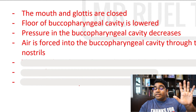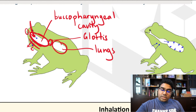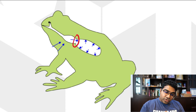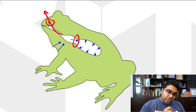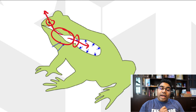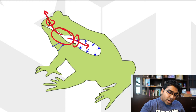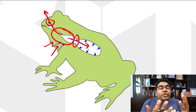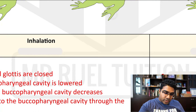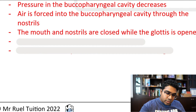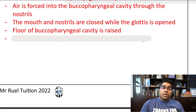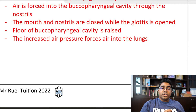So in the second step, the glottis opens and the nostrils close — we don't want air escaping through the nostrils. The floor of the buccal-pharyngeal cavity is then raised, squeezing the air. With the glottis open and the mouth and nostrils closed, there is only one place for air to go — into the lungs. Air is forced into the lungs. That is inhalation in the frog.